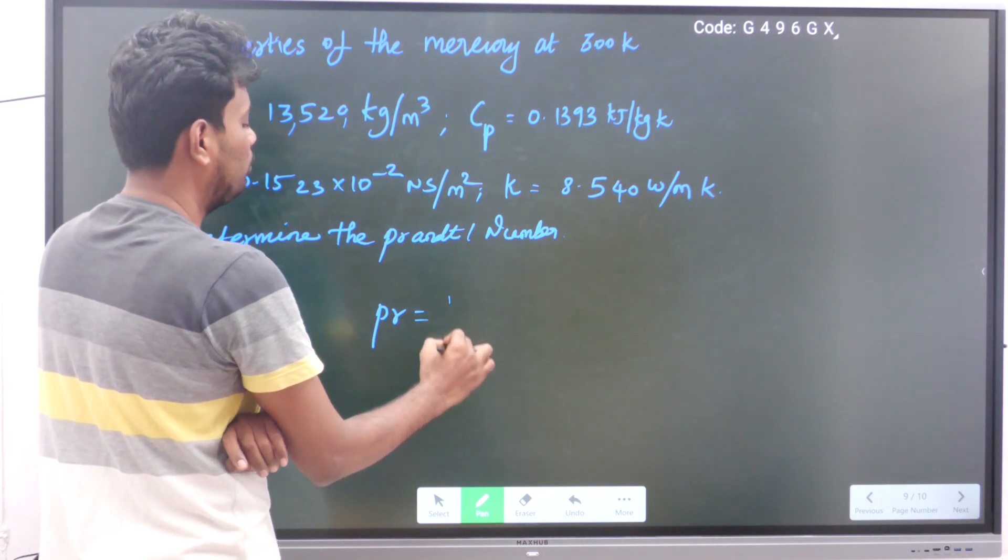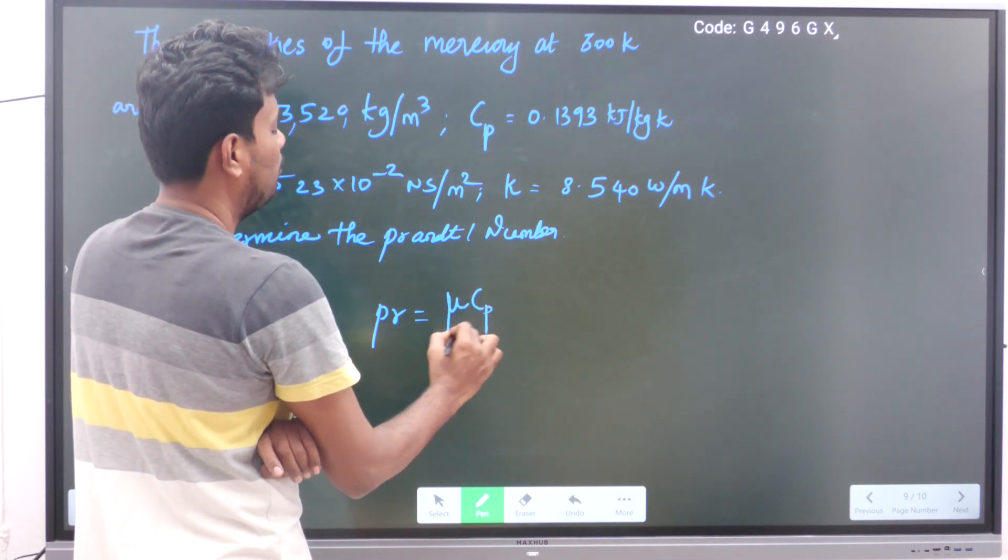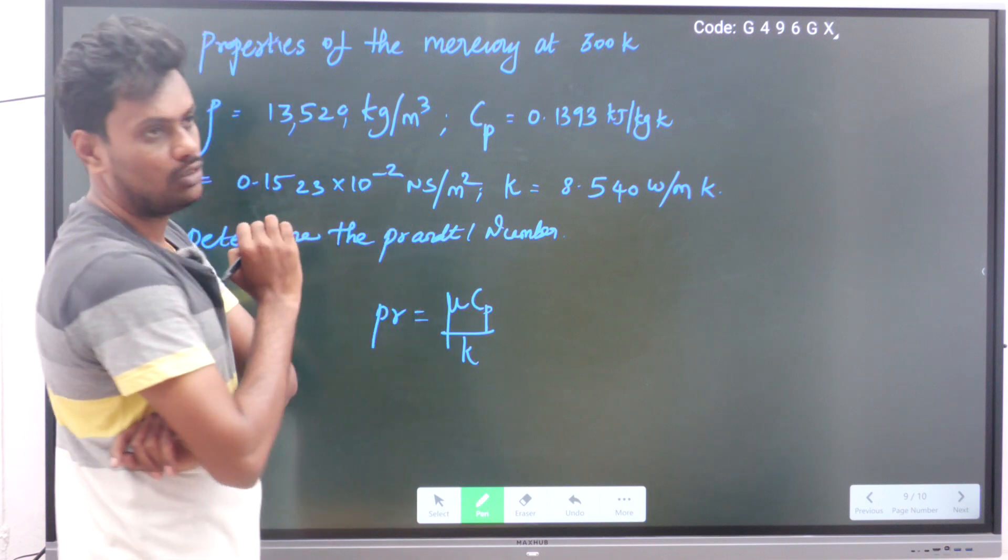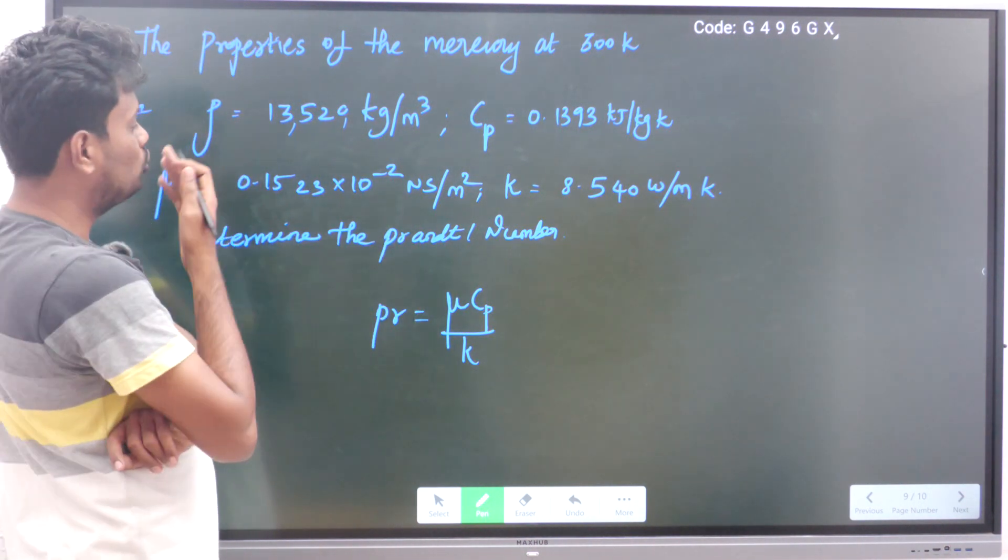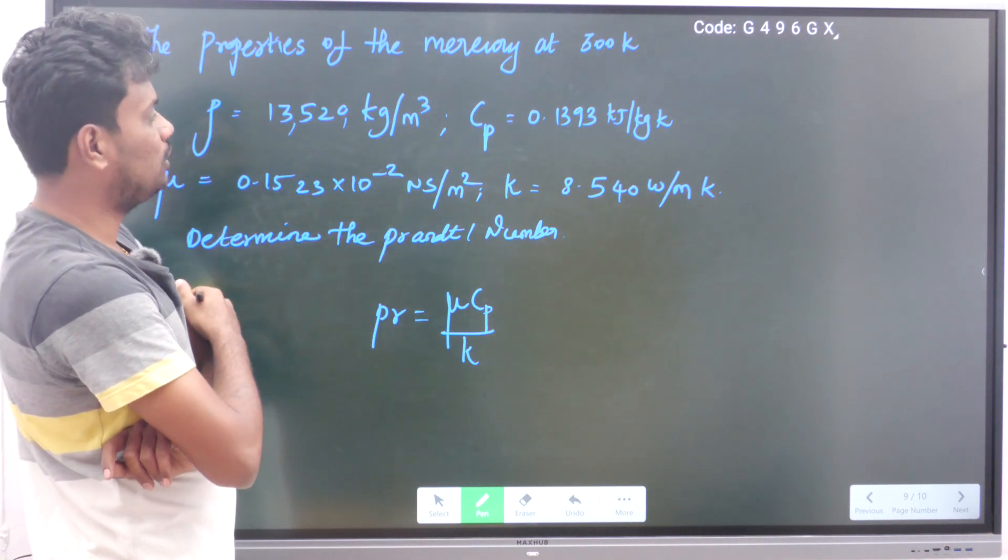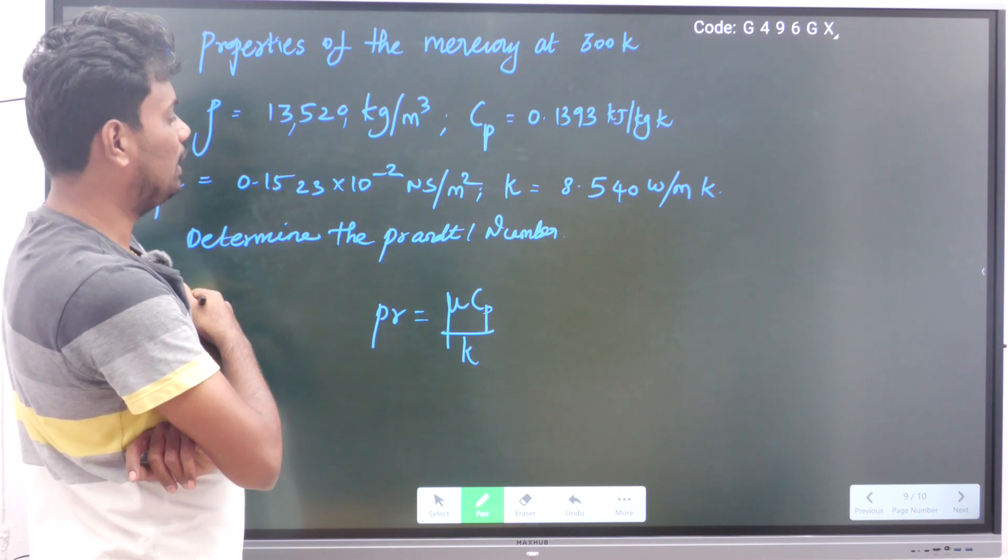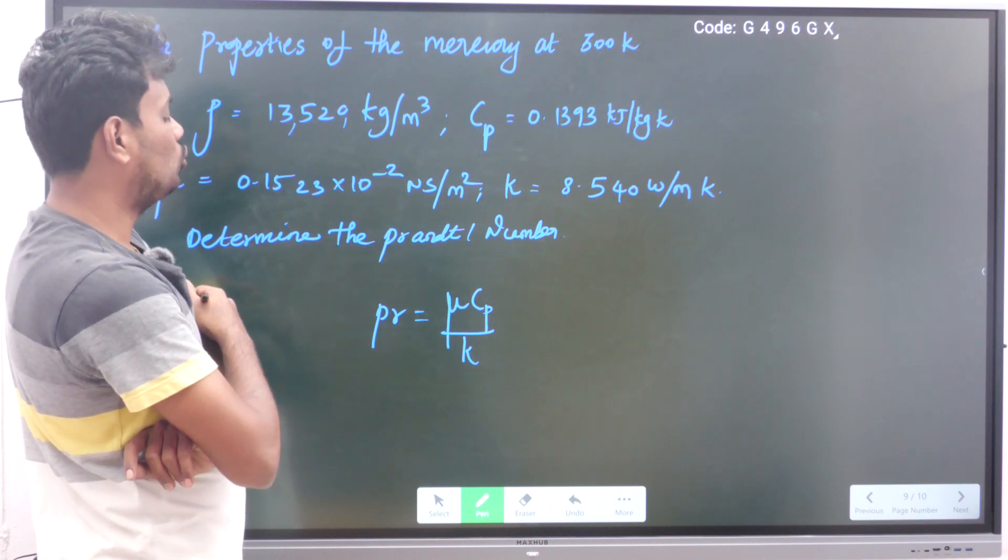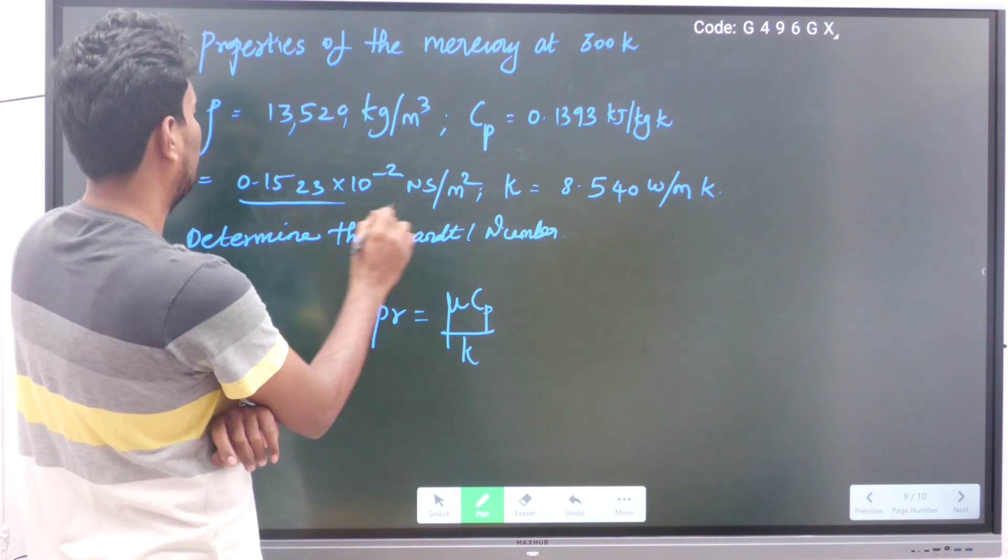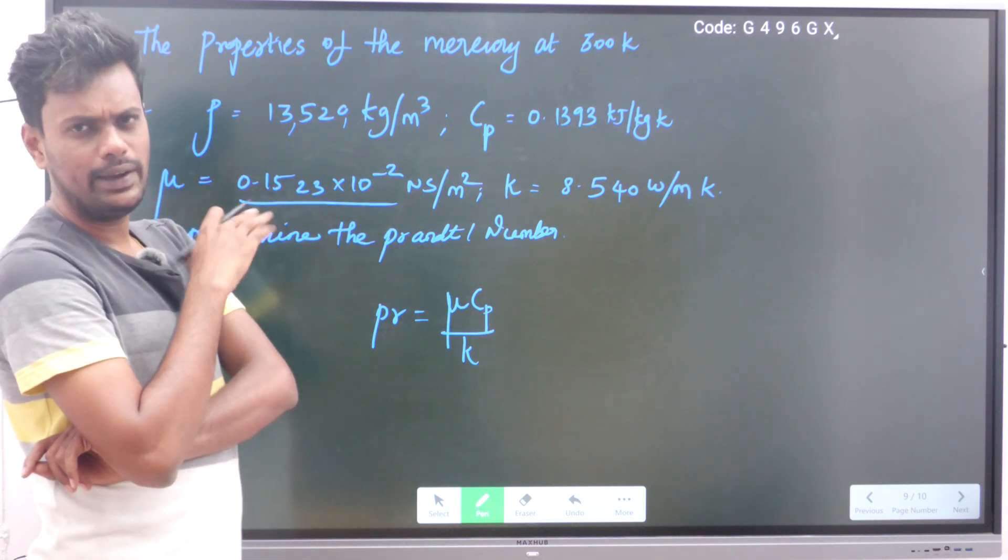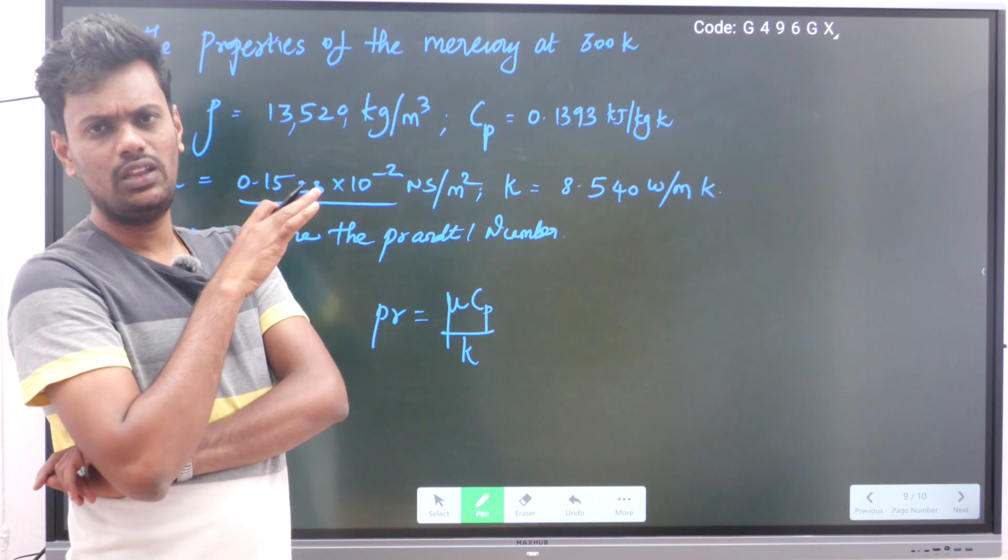Prandtl number is equal to mu times cp divided by k. This is the formula for Prandtl number. You can directly substitute the values in the formula and find out the value of the Prandtl number. The mu value is given as 0.15, and the remaining things you can neglect.